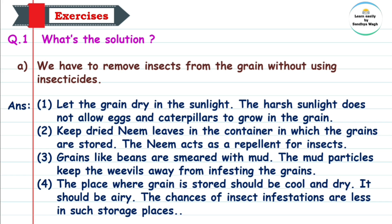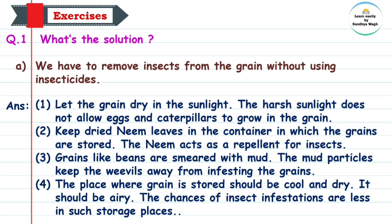The place where grain is stored should be cool and dry. It should be airy. The chances of insect infestation are less in such storage places. 'Infestation' means 'sansarga'. Where you store grain, that place should be cool, dry, and airy — in such places the chance of infestation is low.